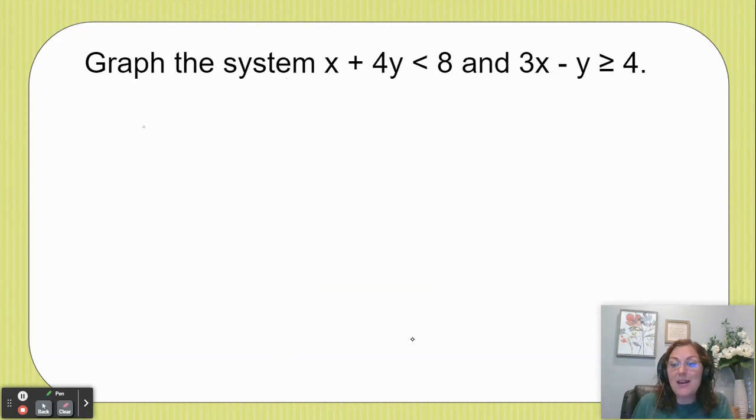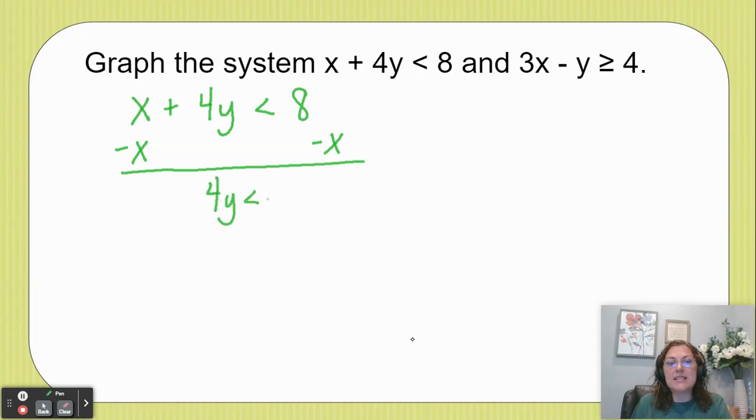In order to get ready to graph these two inequalities, I need to solve for y. So I'm going to take my first inequality and get y by itself. To do that, I'm going to subtract x, and that'll give me 4y is less than negative x plus 8. I like to flip-flop these and make that negative x plus 8, going for that y equals mx plus b version of the formula.